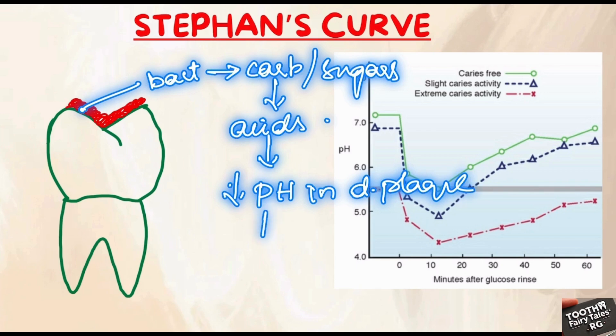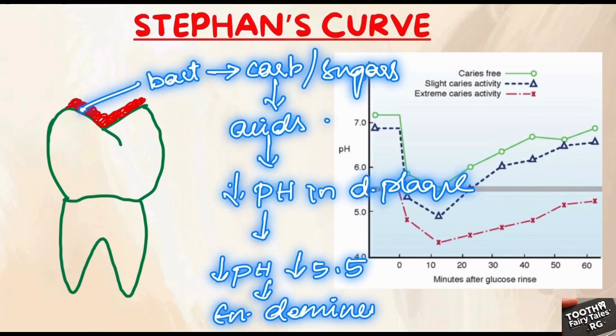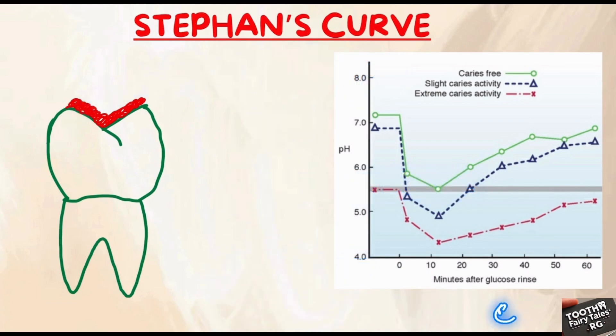The produced acids cause the lowering of the pH in the dental plaque. If the pH falls below 5.5, then the enamel demineralization process is started, which leads to the initiation of caries.